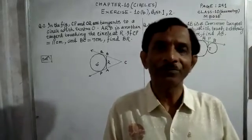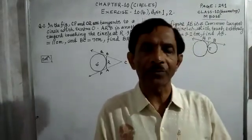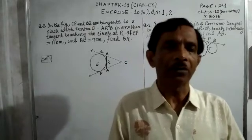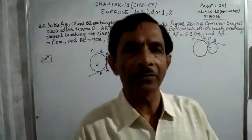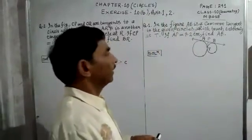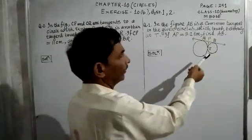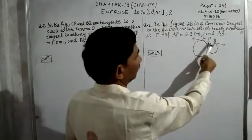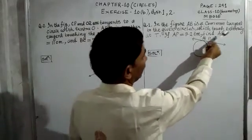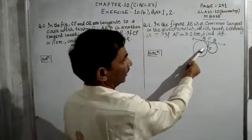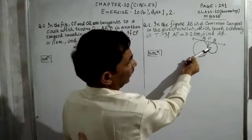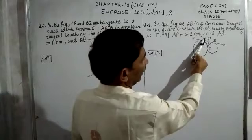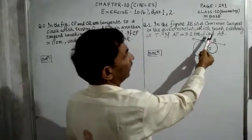Hello my dear students. Today we will learn the sums from geometry, Chapter 10: Circle, Exercise 6b. Look at question number one and two. In question one, in the figure AB is a common tangent to the two given circles which touch externally at point T. If AP is equal to 3.2 centimeters, find the length AB.